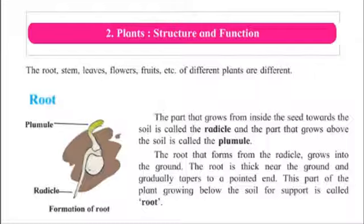Today we are going to talk about roots. Keep a moistened ball of crumpled paper in a conical flask. Place some soaked moth beans or gram seeds in the flask between the paper and the glass wall. Observe and note the changes in the seeds over two or three days. The part that grows from inside the seed towards the soil is called the radicle.